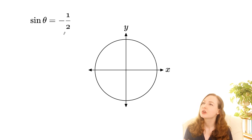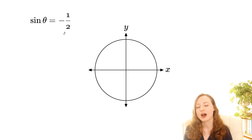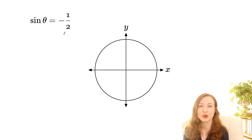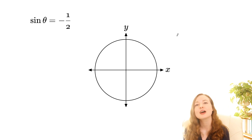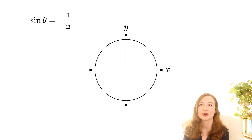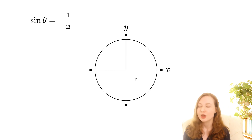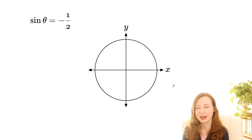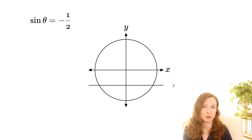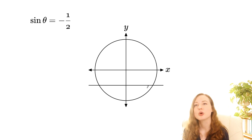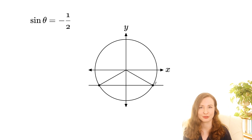For this equation, we've got sine theta equals negative a half. We're going to work out what theta is. Now if you remember from the first video I made on the unit circle, sine theta is the y-coordinate on the unit circle, so we want the y coordinate to be negative a half. We just go down to y equals negative a half and draw a line across there, and then the points where that intersects the unit circle are the angles that we're looking for.